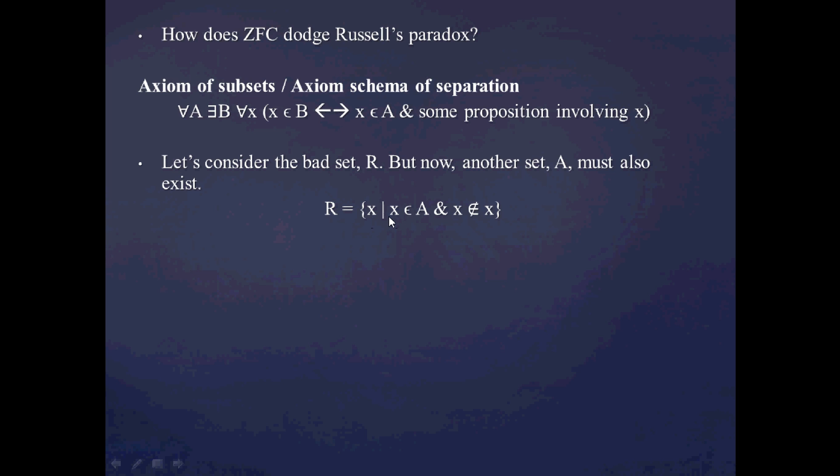So what you have to do is modify that bad set R in terms of saying that R is going to consist of all the objects x, such that x is in some other set A, which is guaranteed to exist, and that x is not an x. So this is the pathological statement here, x is not an x. But we're also forced to include that x is in some other set A, which is guaranteed to exist.